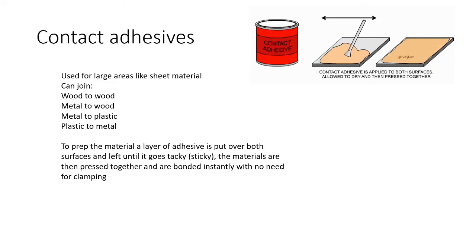Contact adhesive will let you put pretty much anything to anything else — timber to timber, metal to wood, metal to plastic, plastic to metal, glass. For preparation, you put a fine layer on both materials and let it go tacky for about 10–15 minutes until it's sticky to the touch. You then clamp them together and it sticks very quickly — no need for prolonged clamping. This is used for car dashboards, which is why you don't see any welding or bolts inside your dashboard.